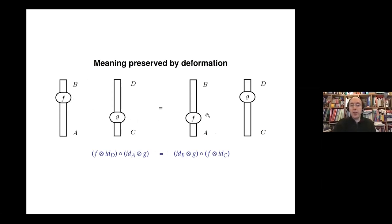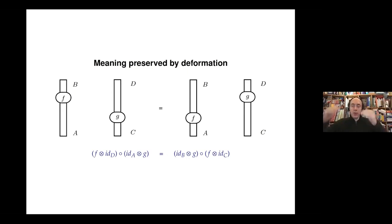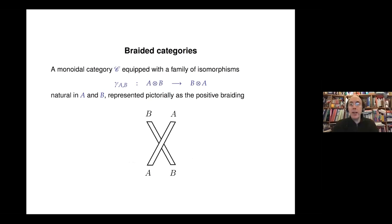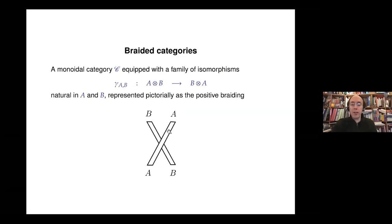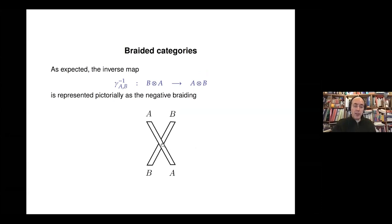A braided monoidal category is a monoidal category equipped with a braiding — a family of isomorphisms from A⊗B to B⊗A — with a positive braiding and its inverse, the negative braiding. The coherence diagrams say, for instance, that permuting A with B⊗C equals permuting A with B and then permuting A with C.